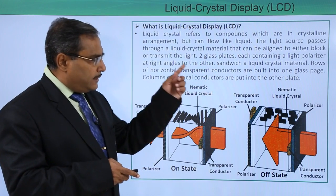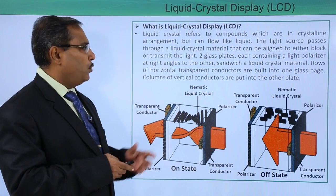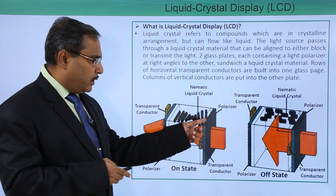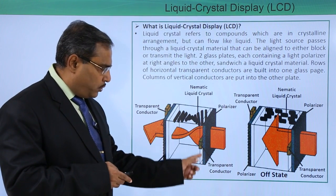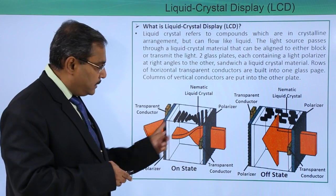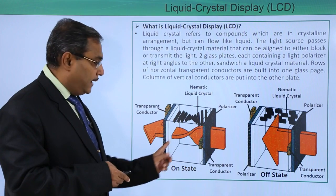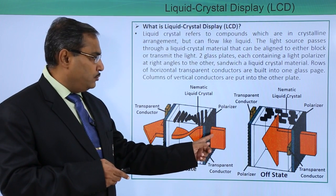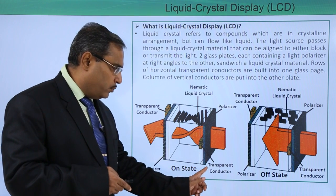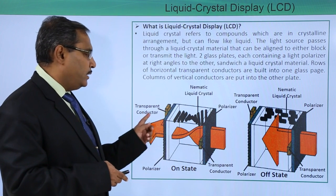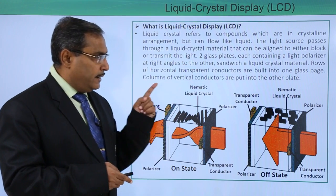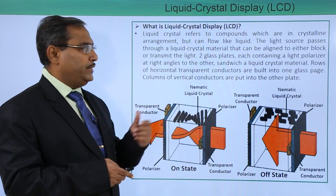Two glass plates each containing a light polarizer at right angles to each other. Here you can find that this is one polarizer, there is another polarizer, and it is horizontally aligned. This is the light which will be passing through, and this is a nematic liquid crystal, with one transparent conductor and another transparent conductor here.